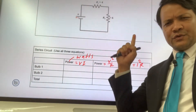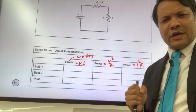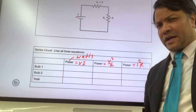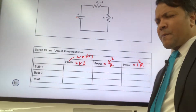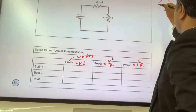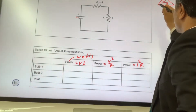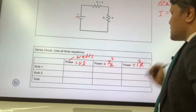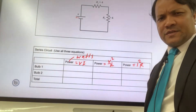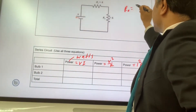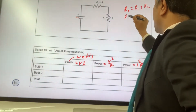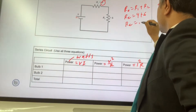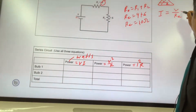We need to know the voltage, the current, and the resistance. We know voltage and resistance, but we have to find the current. We can find the current using Ohm's law: current equals V over the equivalent resistance. The equivalent resistance is R1 plus R2. R1 is 4 ohms and R2 is 6 ohms, so the equivalent resistance is 10 ohms.